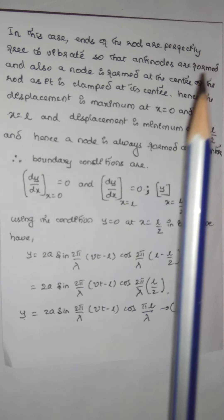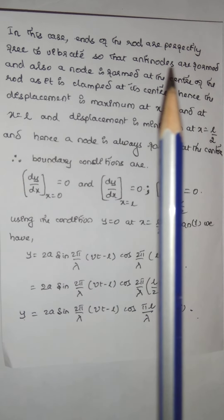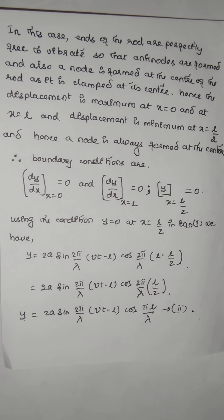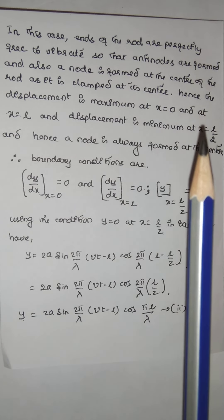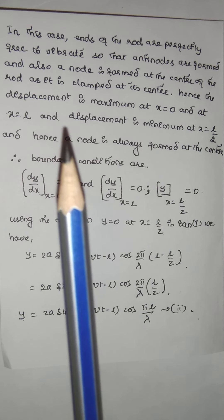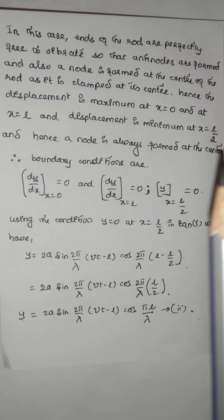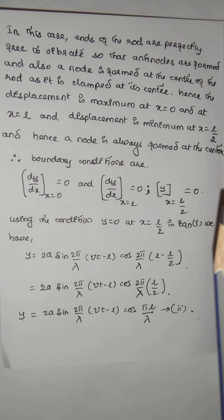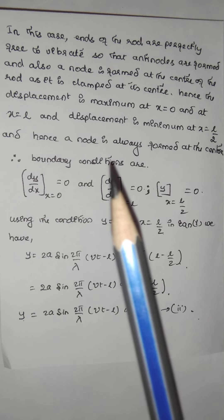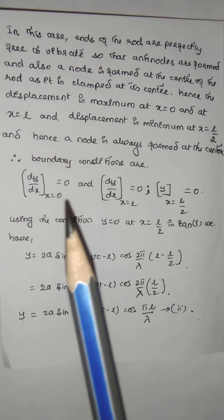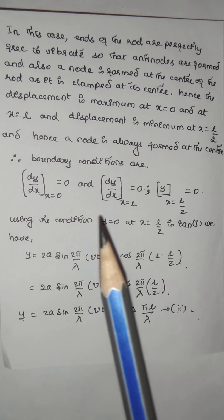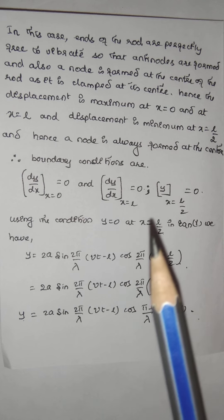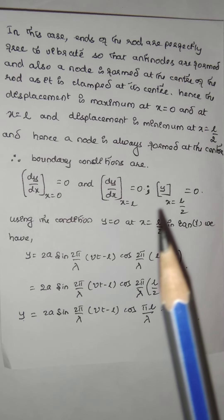The ends of the rod are perfectly free to vibrate, so antinodes are formed at the ends, and a node is formed at the center of the rod since it is clamped there. Hence the displacement is maximum at x = 0 and at x = L, and minimum at x = L/2. A node is always formed at its center. For this, we use the boundary conditions: dy/dx = 0 at x = 0, dy/dx = 0 at x = L, and y = 0 at x = L/2.